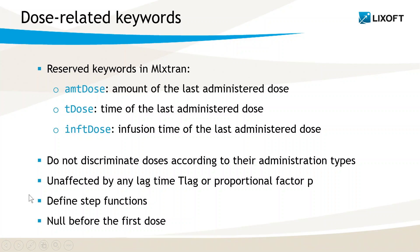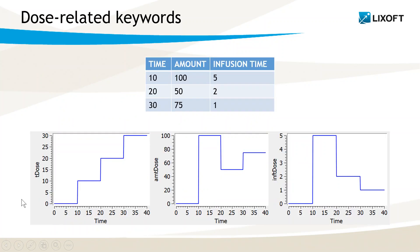Finally, they contain the information from the last dose not only at the time of the dose, but until the next dose, so they define step functions that are null before the first dose. Here is a small example of pre-infusion doses given to an individual at times 10, 20 and 30, with different amounts and different infusion times. For this individual, the variables defined by the dose-related keywords are displayed with respect to time on these plots. We notice that at each dosing time, each keyword is updated with the values from the corresponding dose and stays constant until the next dose.